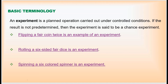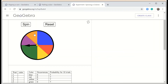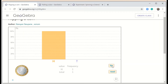Now we have the fundamental idea of experiment. The second term is outcome. Outcome is the result of the experiment. Let's find out what the outcome is by flipping a fair coin twice. If I flip once I get head, and if I flip again I get head. So my outcome is head and head — that is the outcome of my experiment.